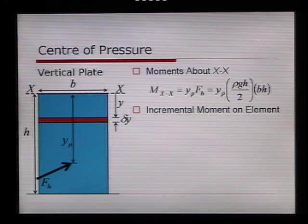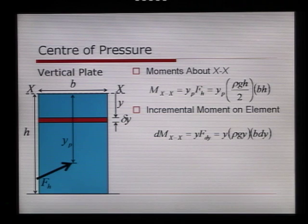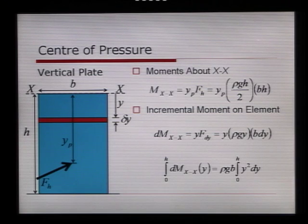Now let's look at the hydrostatic force that acts on a small incremental area. The incremental moment on this element equals the force multiplied by its distance y. So the small moment dmxx equals y times f dy, the force on that highlighted red area, which equals y times the pressure times the area, y times rho g y times b dy. We integrate from y equals 0 to y equals h, and find this equals rho g b, the integral from 0 to h of y squared dy.